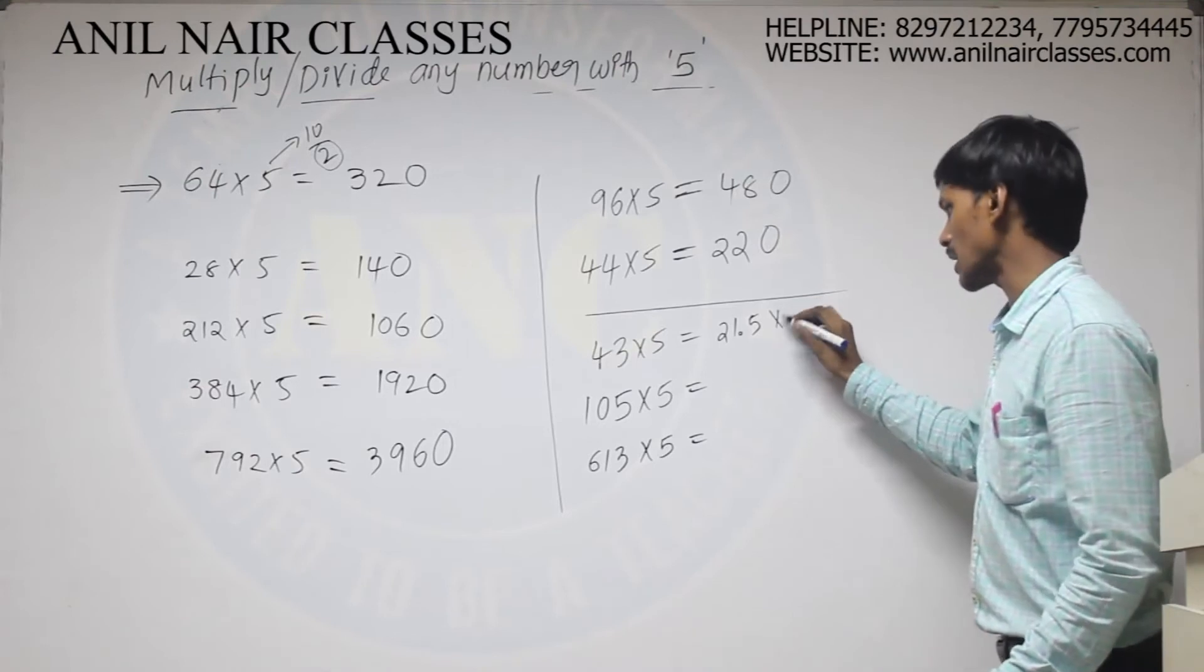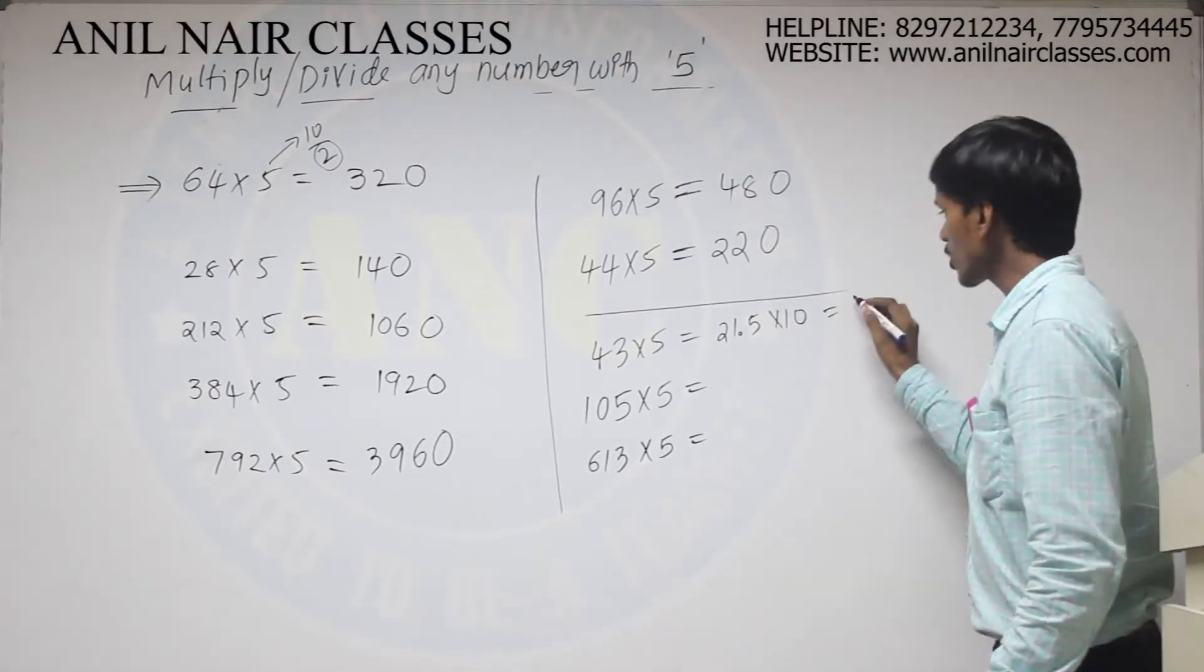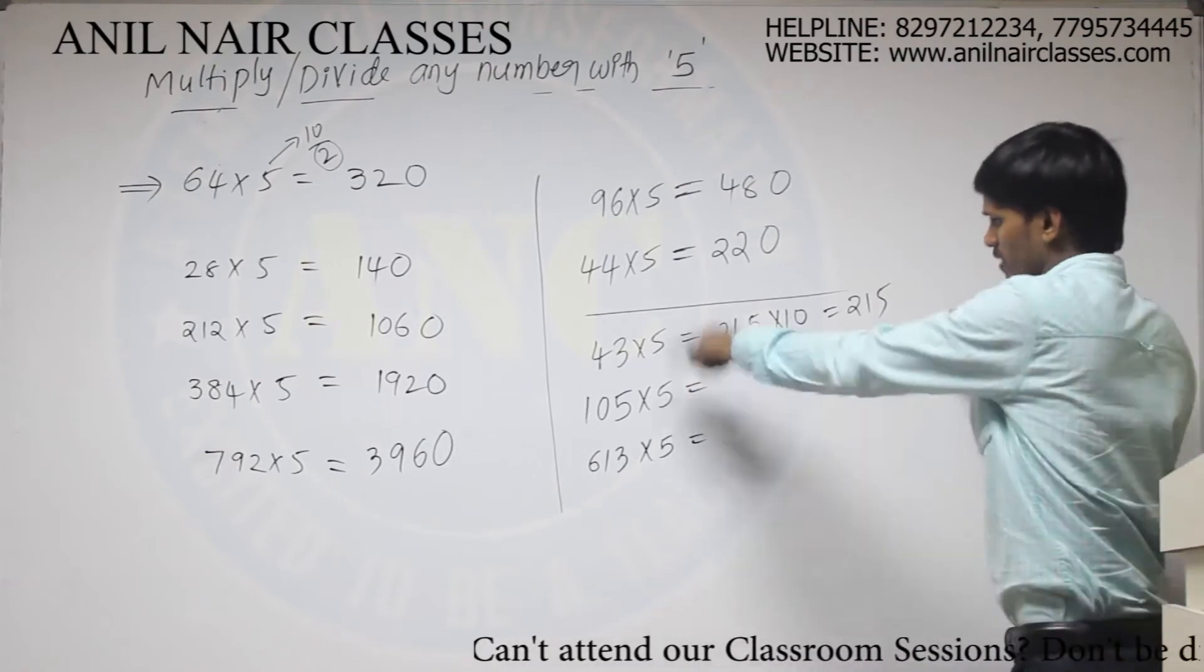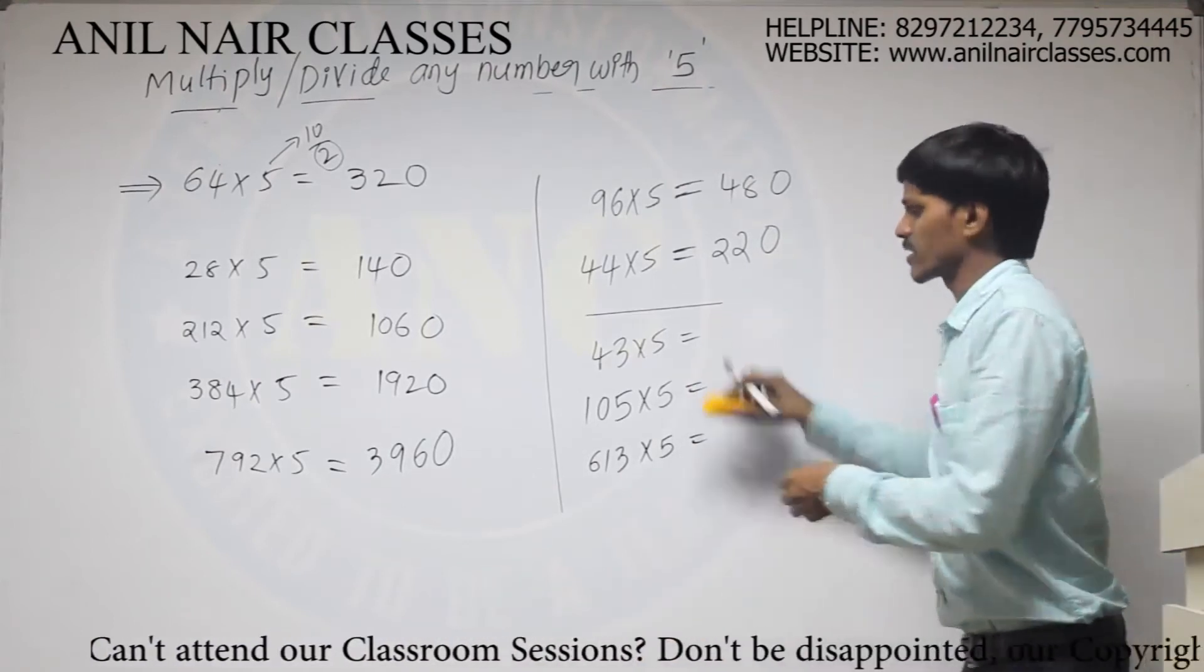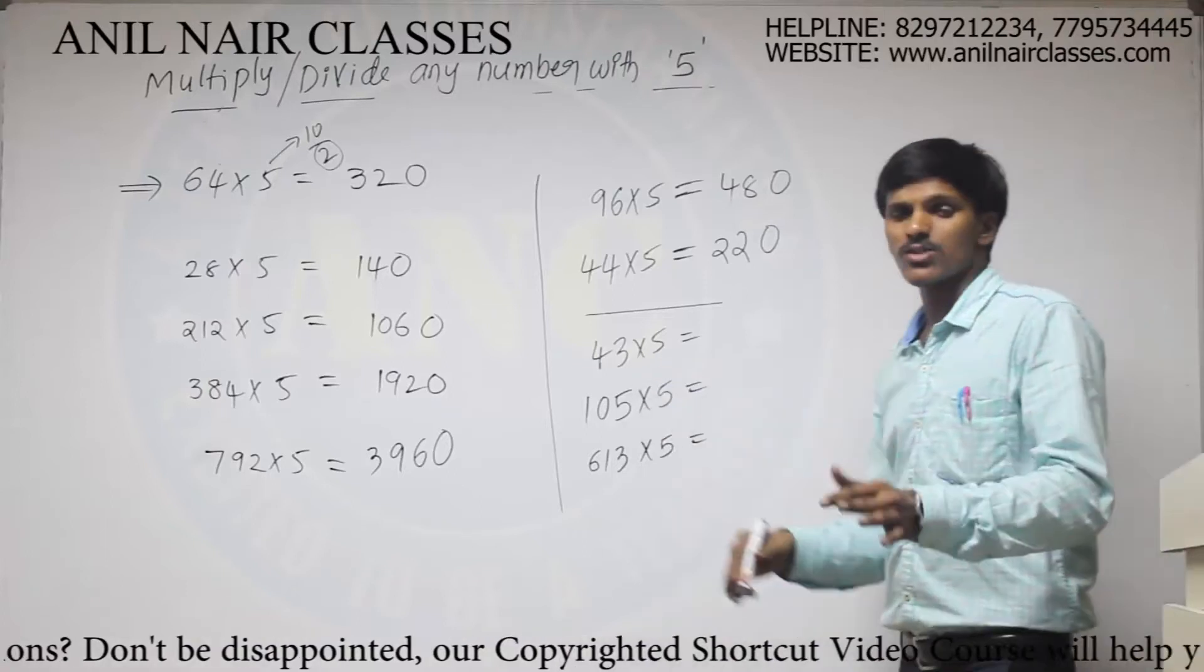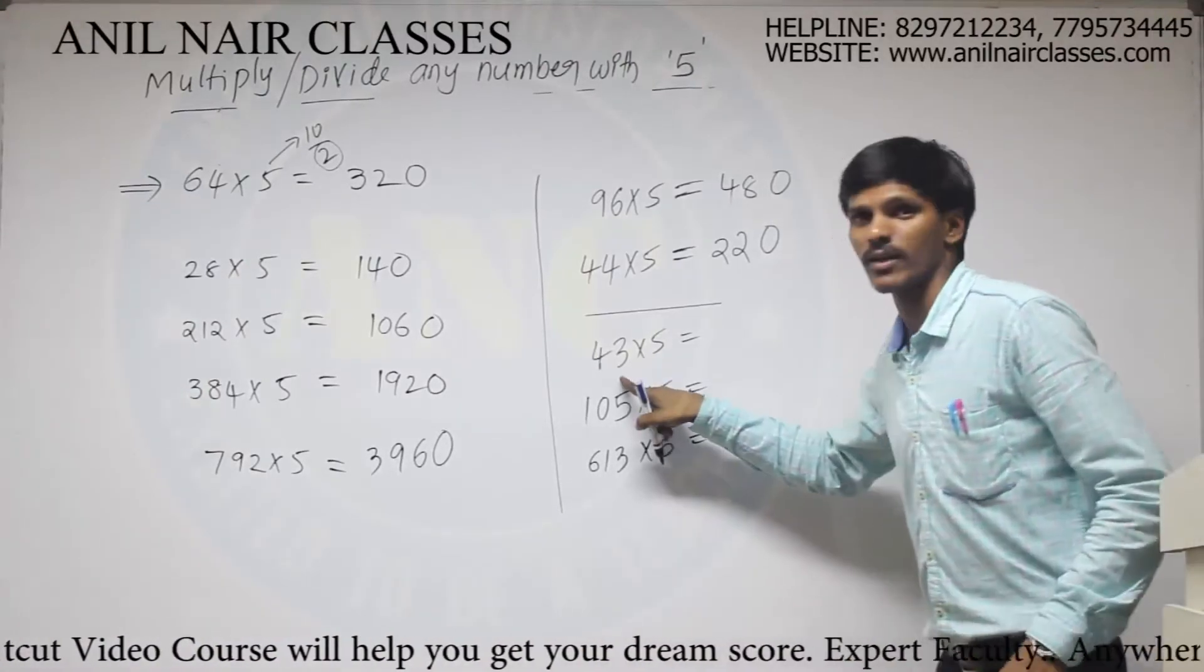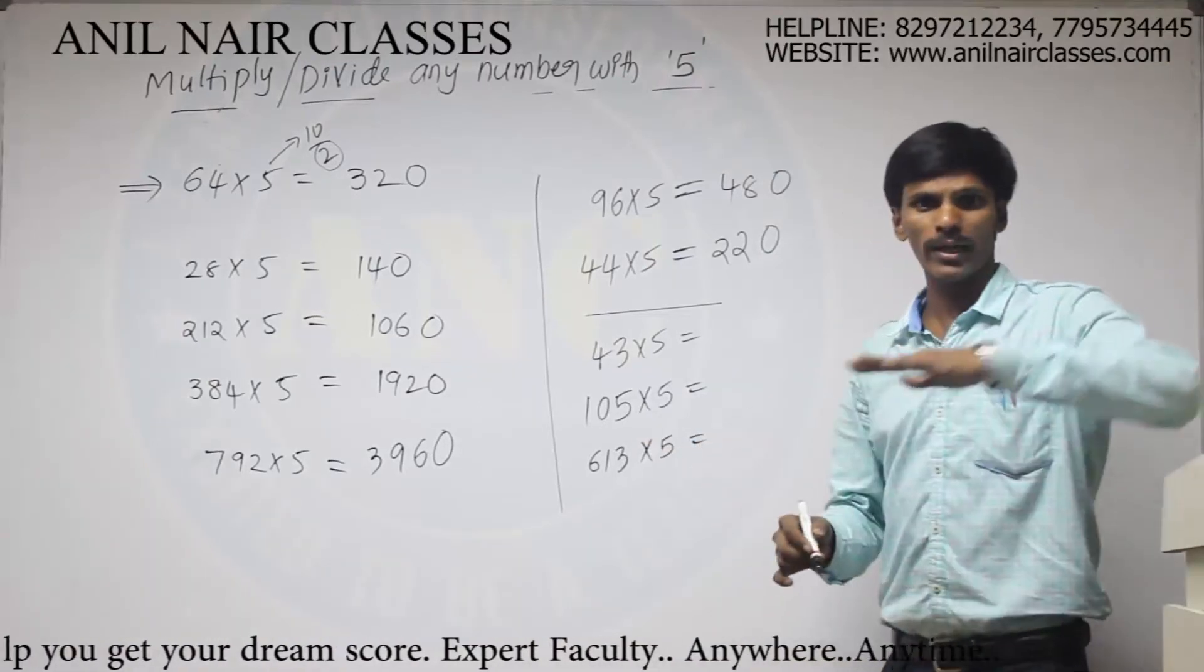And you have to multiply with 10. It will be equal to 215. But here you may waste some time for writing this number. So if the given number is not perfectly divisible by 2,